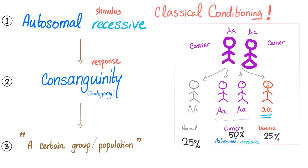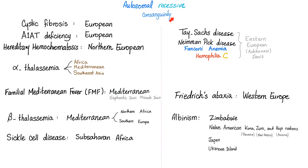Autosomal recessive diseases are associated with specific populations due to consanguinity. Cystic fibrosis and alpha-1 antitrypsin deficiency are most prevalent in Europeans; hereditary hemochromatosis in Northern Europeans; alpha-thalassemia in Africa, Mediterranean, and Southeast Asia; familial Mediterranean fever in Arabs, Sephardic Jews, and Mizrahi Jews; Tay-Sachs, Niemann-Pick, and Fanconi in Ashkenazi Jews — Eastern European Jews.